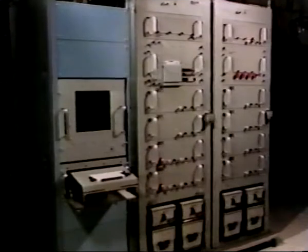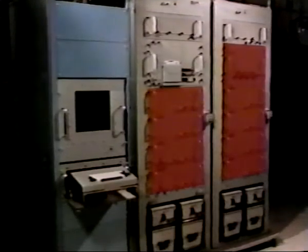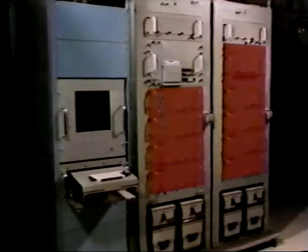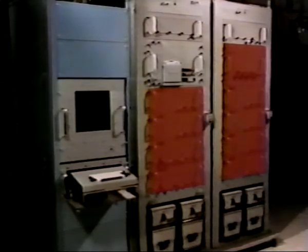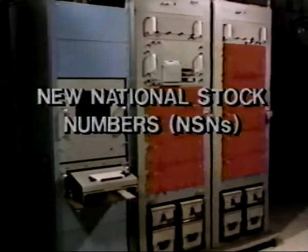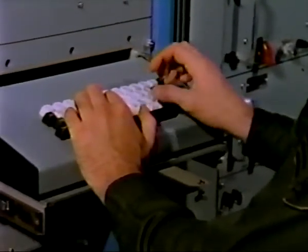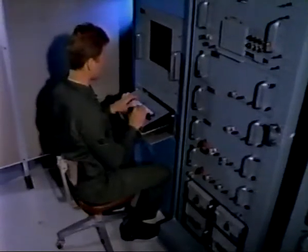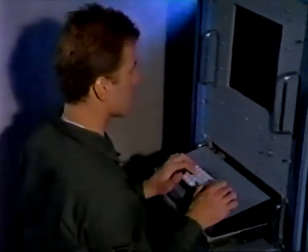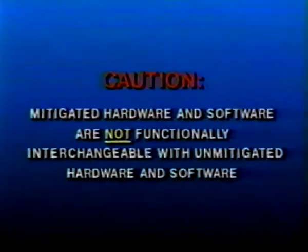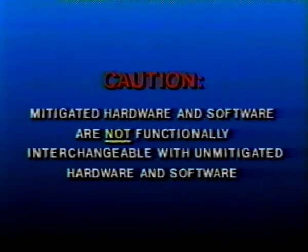To convert a USC-28 into a mitigated system, wiring changes to some of the drawers are required. Approximately 35% of the total modules in the system are replaced and completely new software is utilized. Drawers modified for mitigation have MIT added to their nameplates. Mitigated PCBAs are identified with new part numbers. The current USC-28 AFI philosophy and fault isolation capability has been carried forward, with each printed circuit board containing built-in test points that permit automatic troubleshooting and fault isolation to the board level. Mitigated hardware and software are not functionally interchangeable with unmitigated hardware and software.